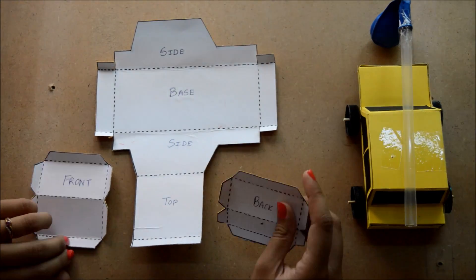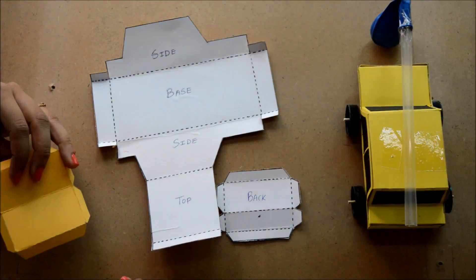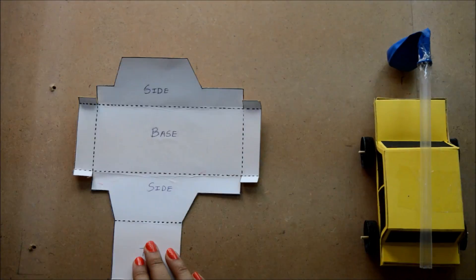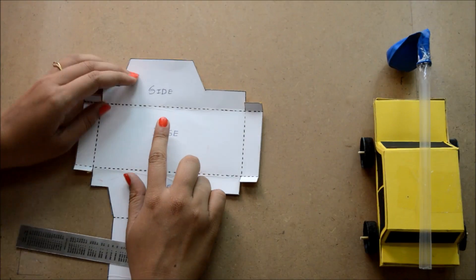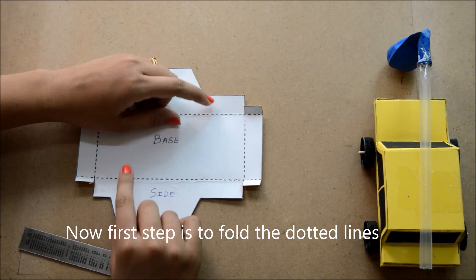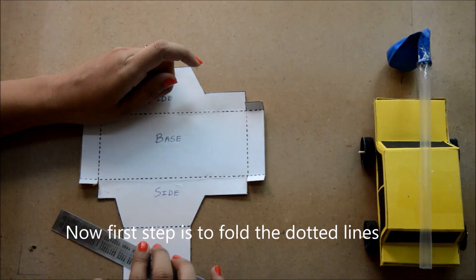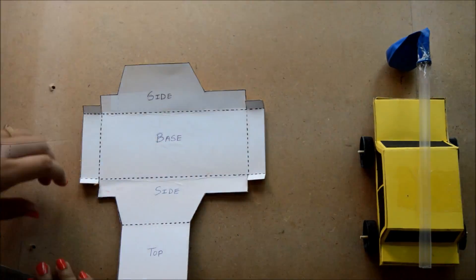The front part and the back part. Now first step is to fold the dotted lines like this.